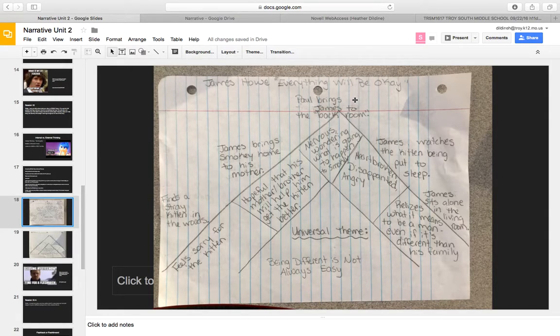So just like in the climax of Everything Will Be Okay, Paul brings James to that back room, and we see that happening. But what we don't see is he's nervous, he's wondering what's going to happen to Smokey. And so that's the internal that you're going to write about on the inside.